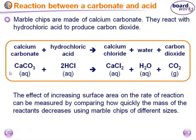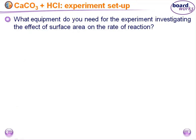This experiment will use two forms of calcium carbonate: small lumps and large lumps. This allows us to compare a large surface area versus a small surface area, and determine at which surface area the reaction proceeds faster.